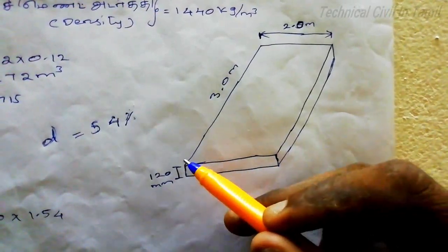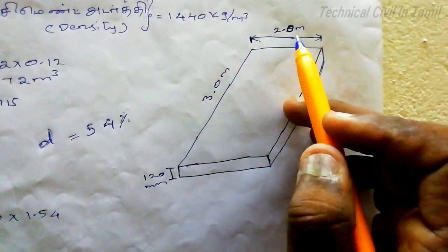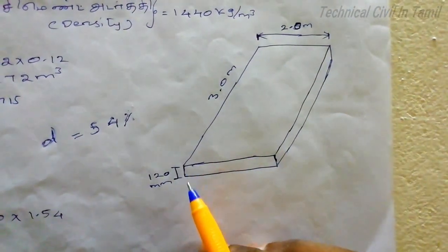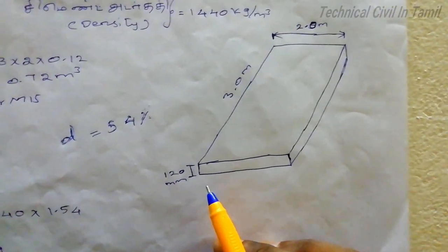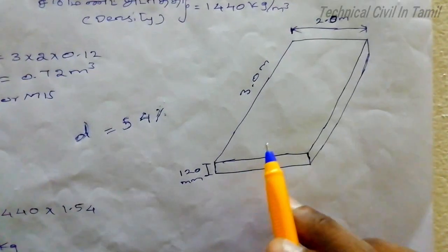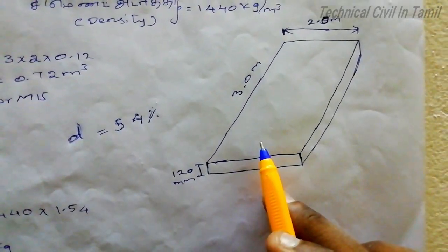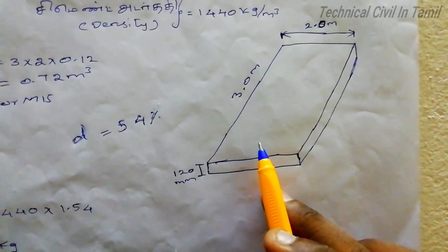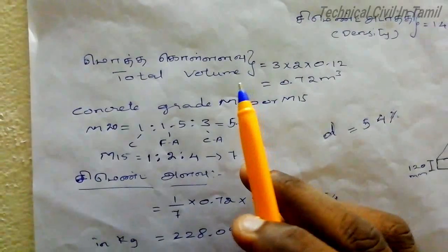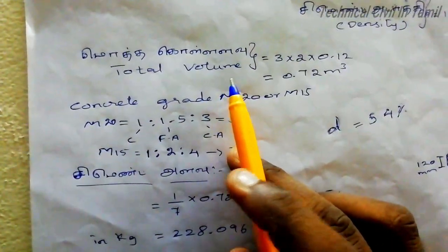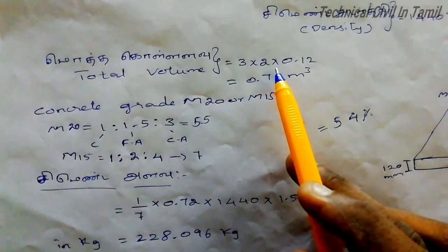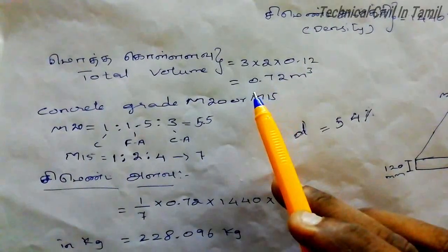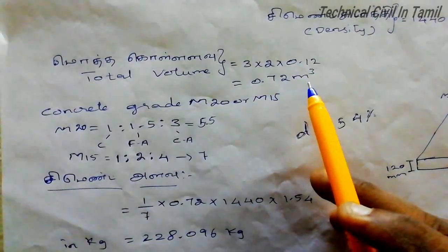This slab is 3 meters by 2 meters and a depth of 0.12 meters. For this slab, we will calculate the concrete. The volume is 3 x 2 x 0.12, which equals 0.72 cubic meters.